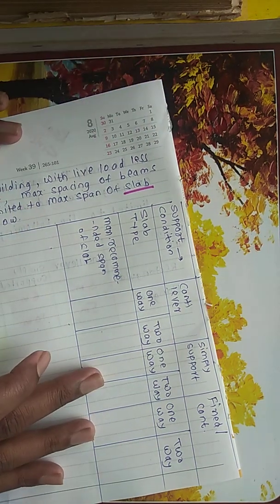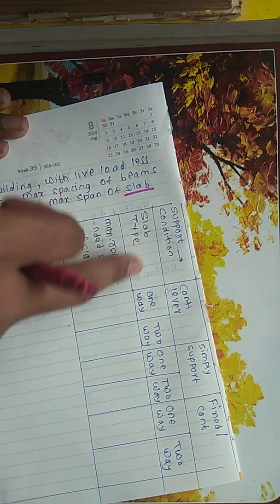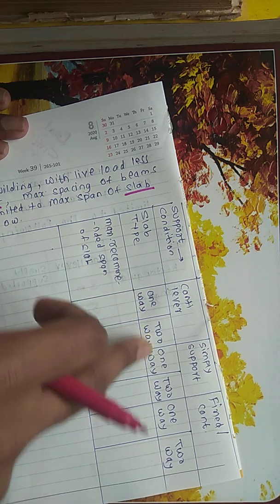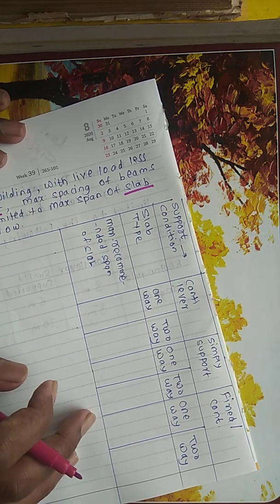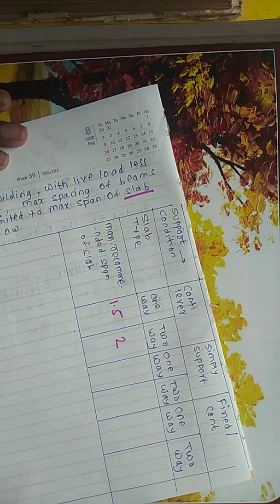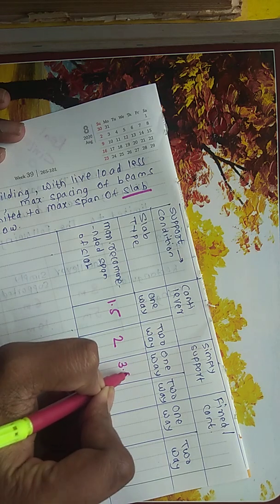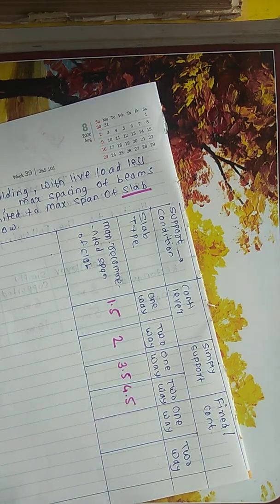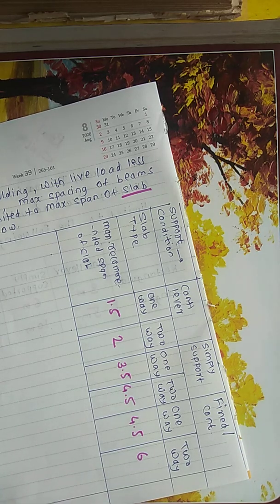I have made a table here showing support conditions — cantilever, simply supported, and fixed — and whether the slab is one-way or two-way. For cantilever: one-way is 1.5 meters and two-way is 2 meters. For simply supported: one-way is 3.5 meters and two-way is 4.5 meters. For fixed: one-way is 4.5 meters and two-way is 6 meters. Two-way has the greatest span because the load is distributed over more beams.